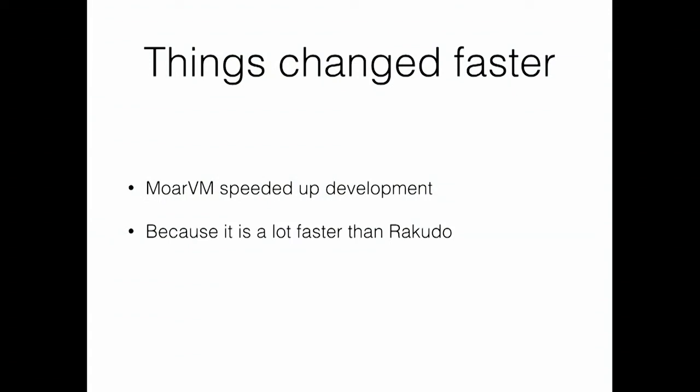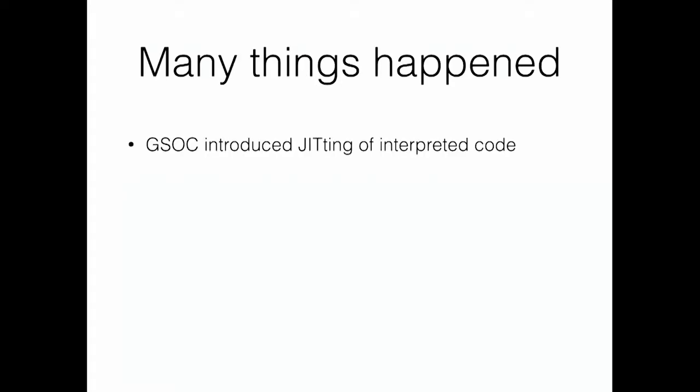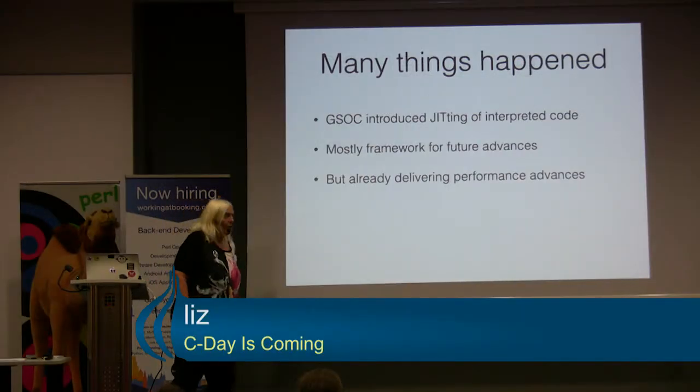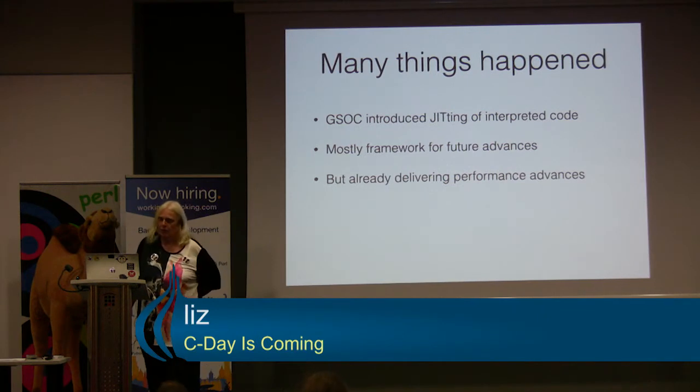And because it's now a lot faster than Rakudo, it's still getting a lot faster still. You may have seen Jonathan's talk. A lot of things happened on the way. Google Summer of Code introduced JITting for interpreted code in Pro 6. But it's mostly, at the moment, a framework for future advances still, though it's already getting some nice performance gains.